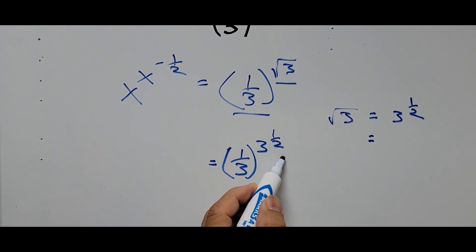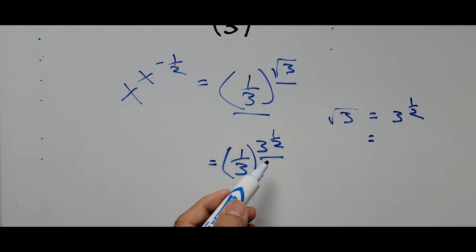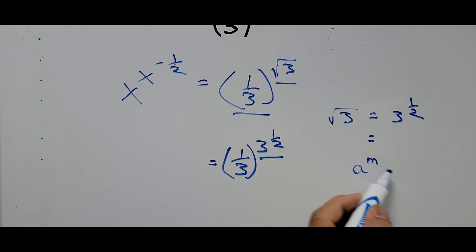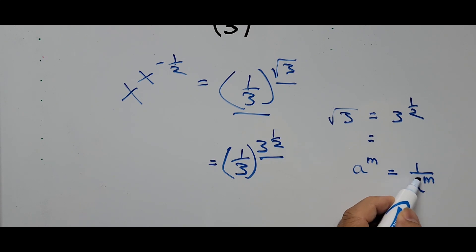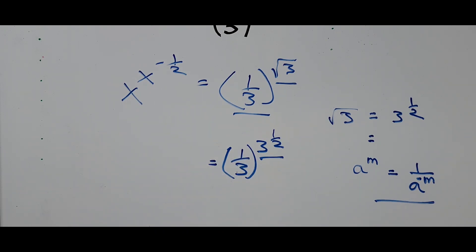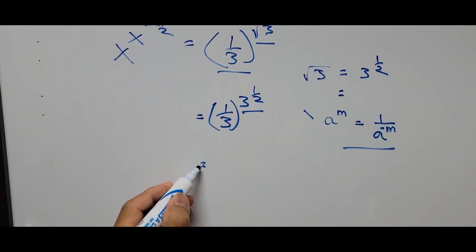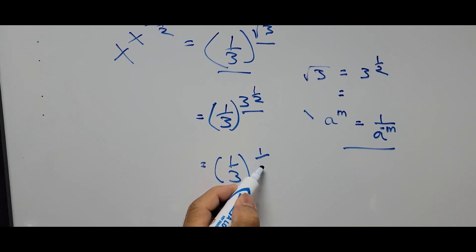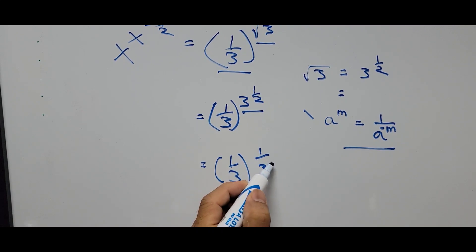We focus our attention on the exponent 3 raised to the 1 half power, and we use an exponent rule: a raised to m is equal to 1 over a raised to negative m. Applying that to the right side, we get 1 third raised to 1 over 3 raised to negative 1 half.